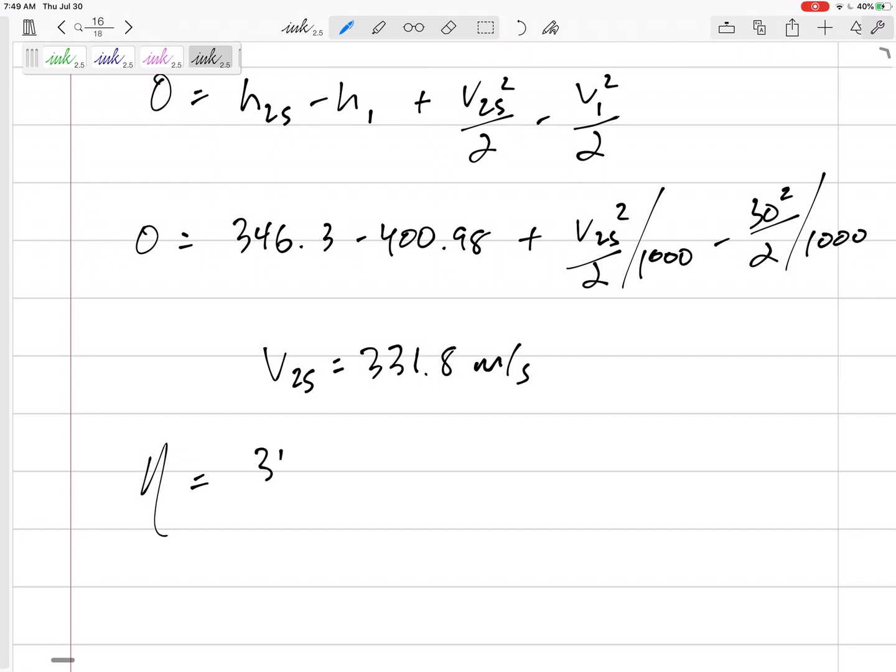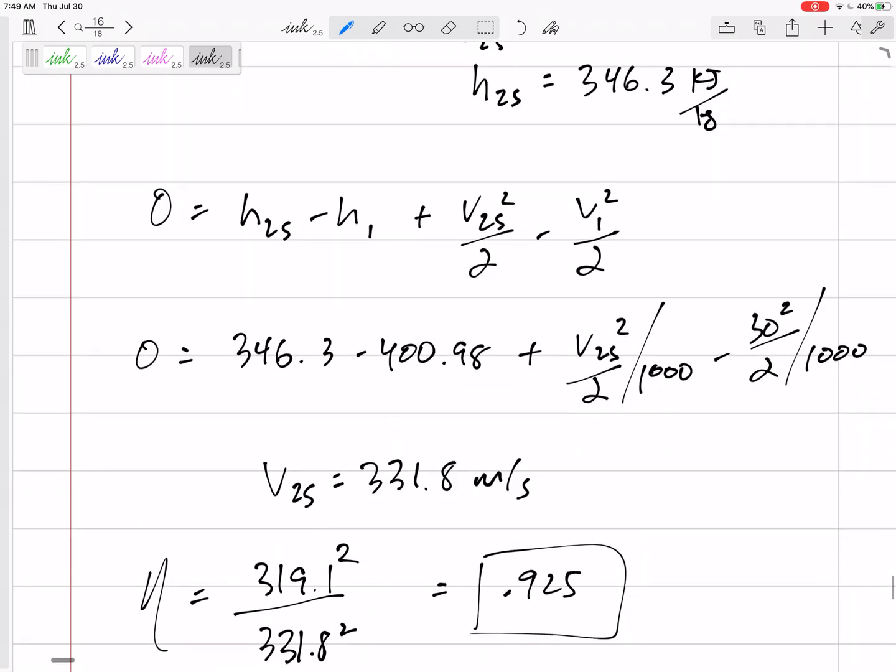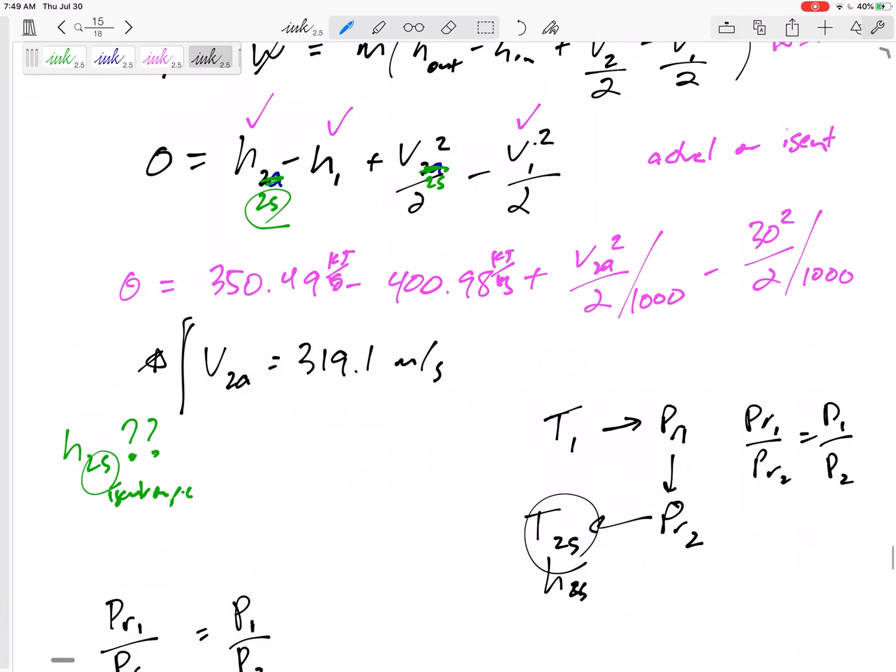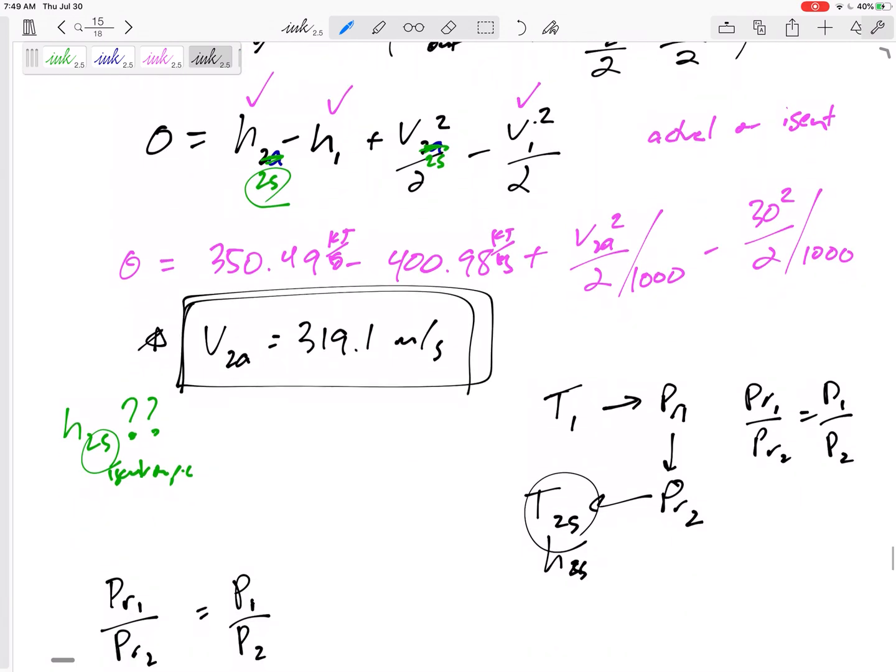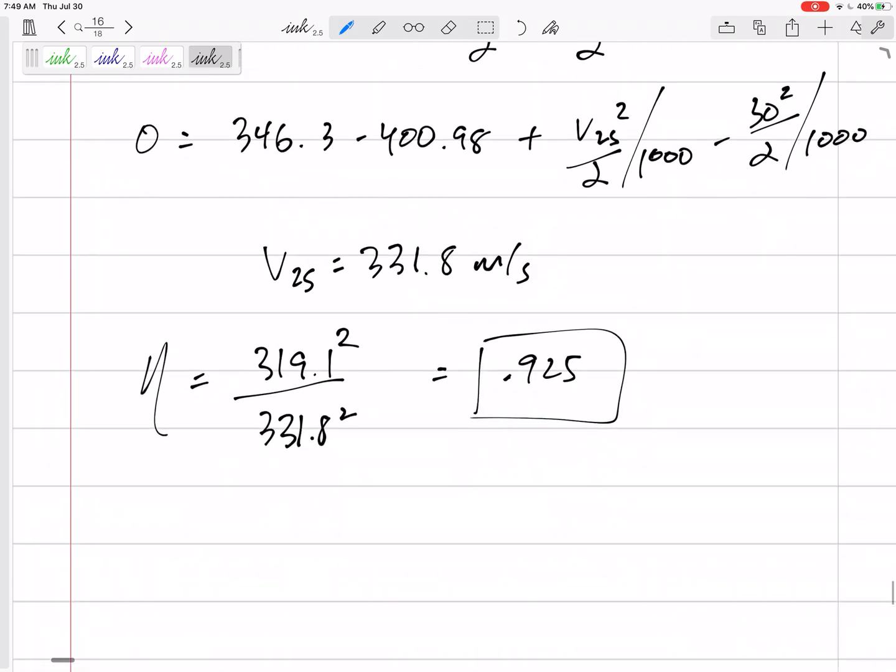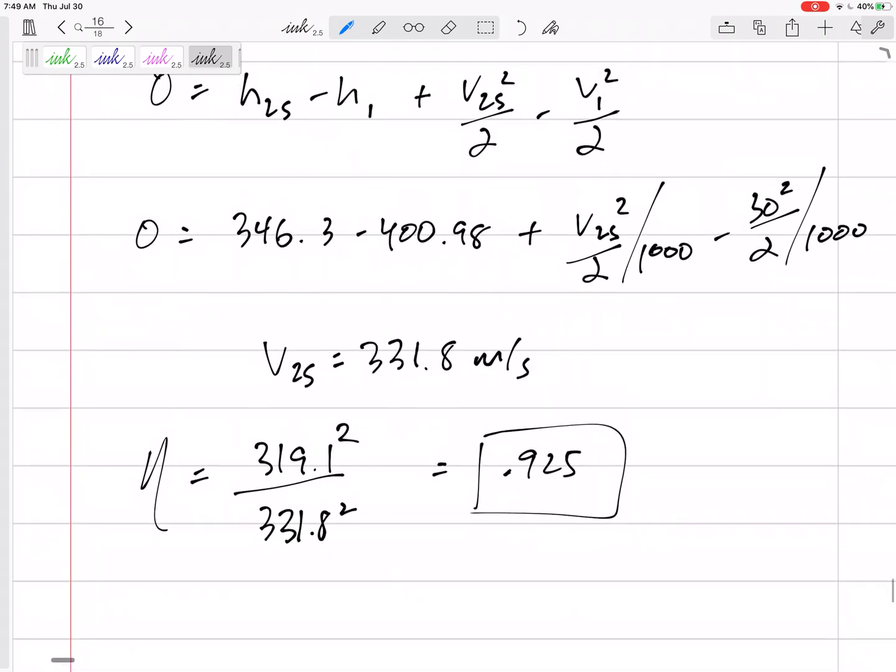So the efficiency is 319.1 squared over 331.8 squared equals 0.925 or 92.5%. I had already found the exit velocity - 319.1. So that was tough.